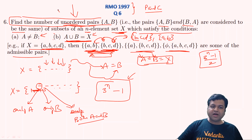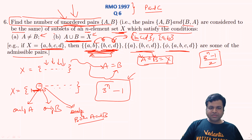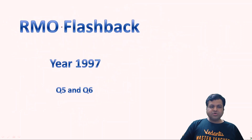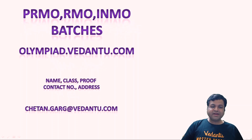As you can see, this is a very simple question of permutation and combination. I hope you understood this question. That's it from today's session — we have discussed the last two questions of year 1997. In the next lecture, we will be discussing the first two questions of year 1998.